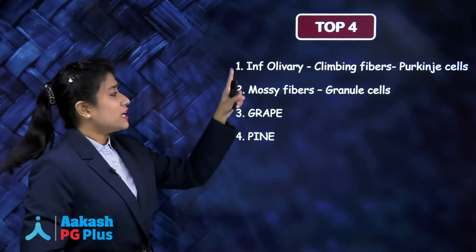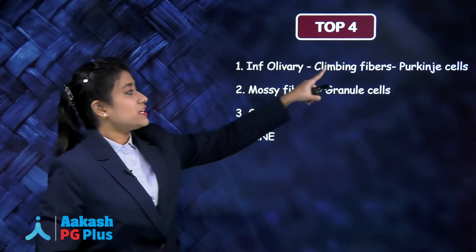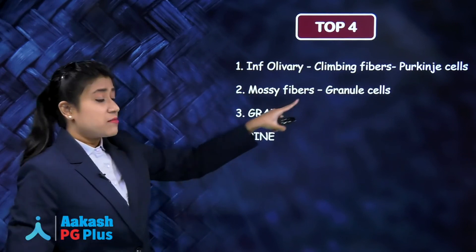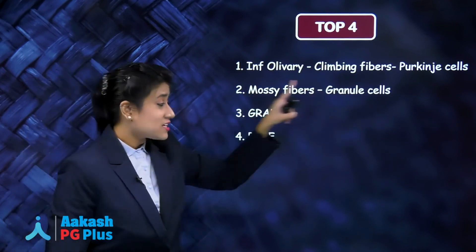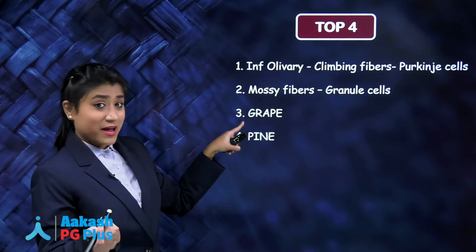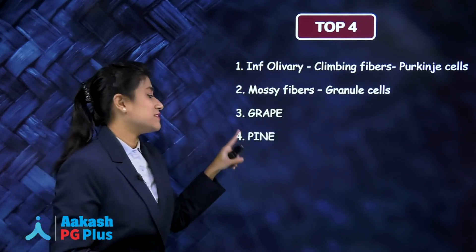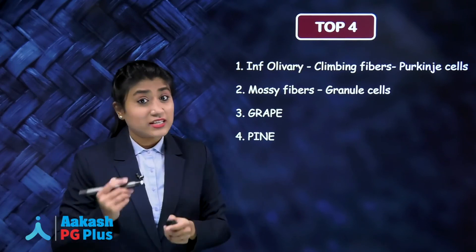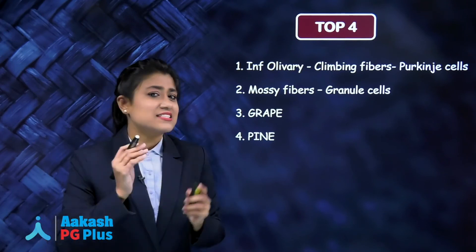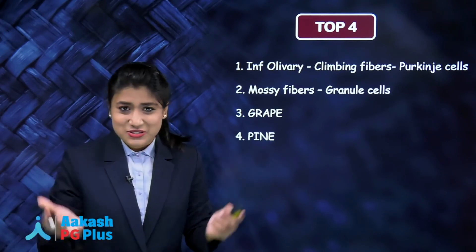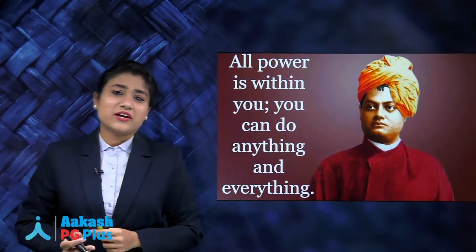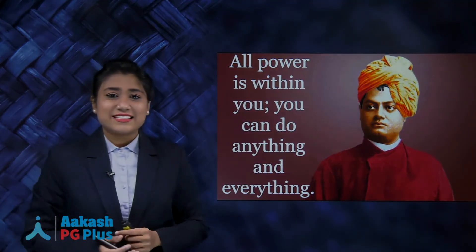To summarize the physiology of the cerebellum, remember these four key elements: inferior olivary nucleus → climbing fibers → Purkinje cells; mossy fibers → granule cells. And the three mnemonics: GRAPE, PINE, and Singham Police. Let's take a 10-second break.